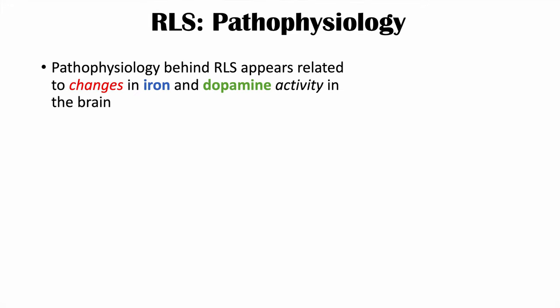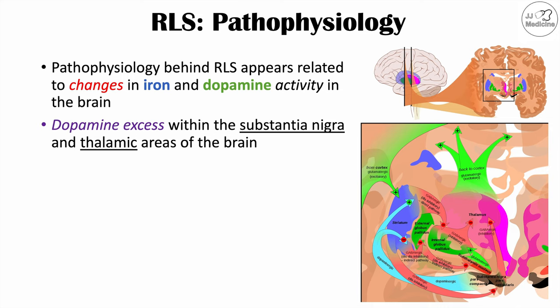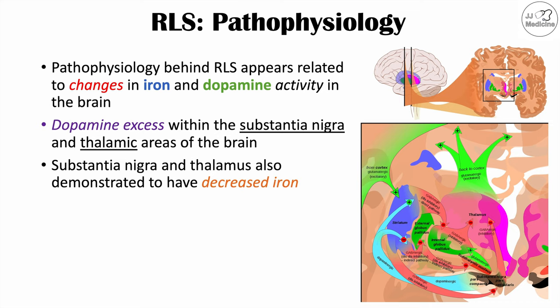The pathophysiology behind restless leg syndrome appears related to changes in iron and dopamine activity in the brain. Focusing on the thalamus and the substantia nigra — two areas involved in muscle movement — dopamine excess within these areas appears to be related to restless leg syndrome. Additionally, if cells in those areas have decreased iron, this also seems related to the onset of symptoms.